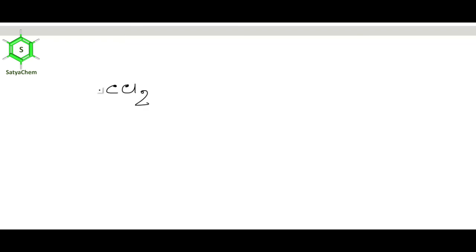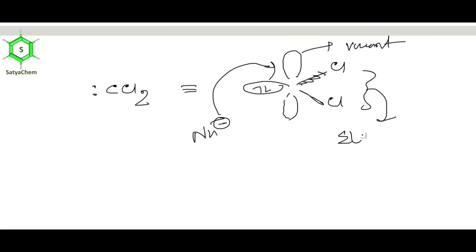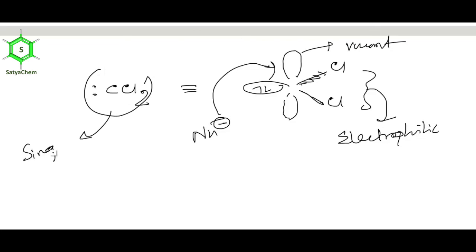Dichlorocarbene (CCl2) is an important example. It is singlet carbene — electrons are paired in an sp2 orbital, and the unhybridized p orbital is vacant. Because the p orbital is vacant, a nucleophile can attack there, making this carbene electrophilic. The way dichlorocarbene is formed (from CHCl3 with a base abstracting H+, giving CCl3 minus stabilized by –I effect of Cl and vacant d-orbital conjugation, then Cl leaves as a good leaving group) proves it is singlet.